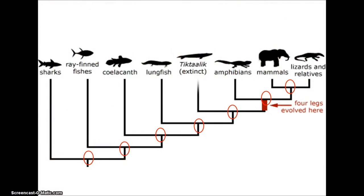This tree shows the relationships between fish and tetrapods, or animals with four limbs. Each place where two branches come together is called a node. The nodes are marked with red circles. Each node represents a common ancestor. For example, this node represents the common ancestor of mammals and lizards.